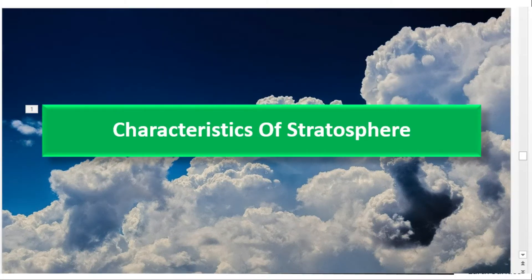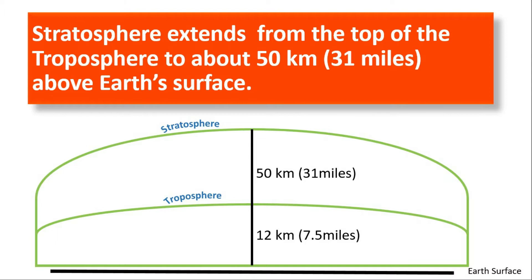Characteristics of stratosphere: The stratosphere extends from the top of the troposphere to about 50 km or 31 miles above Earth's surface. From the Earth's surface to 12 km height, we have the troposphere, and from there to 50 km height, we have the stratosphere.